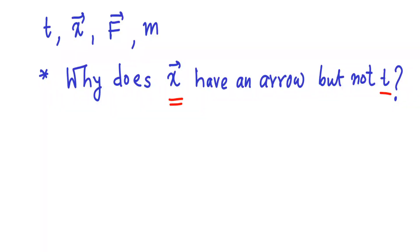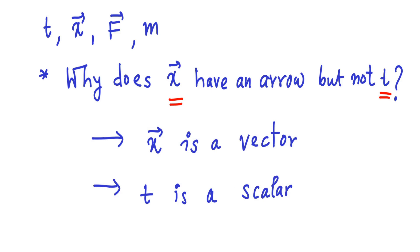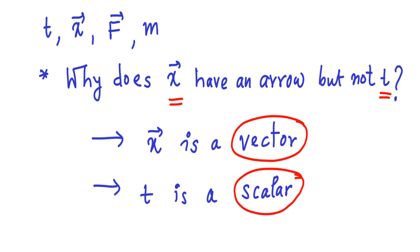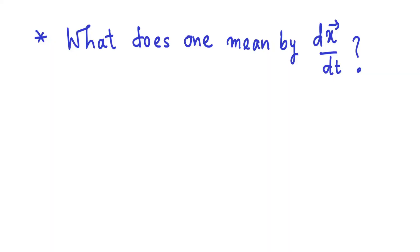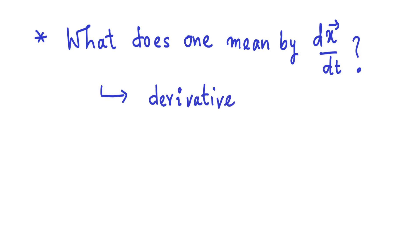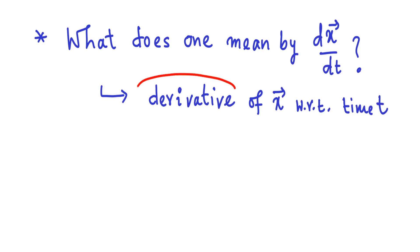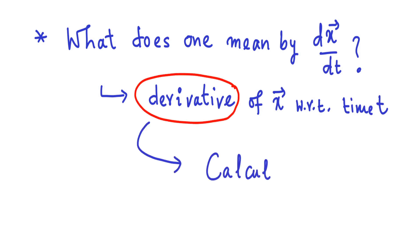Now we may ask, why does the variable X have an arrow on it but not the variable T? As you may already know, X is a vector whereas T is a scalar. Secondly, what does the term dx/dt mean? Some of you may have studied such terms, but some may not have had mathematics in your class. Here, dx/dt refers to the derivative of X with respect to T. This leads us to the concept of calculus.